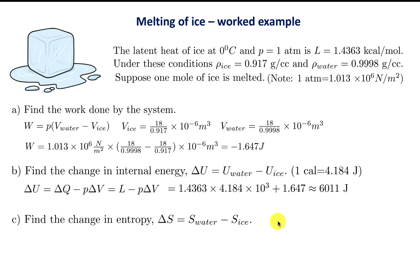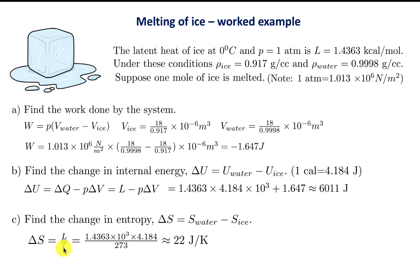Finally, find the change in entropy. We expect ΔS to be positive because water is more disordered than ice. The change in entropy is the latent heat divided by the melting temperature: ΔS = L/T = L/(273 K). Putting in the latent heat and working out the result gives ΔS = 22 J/K. This is positive because the ordered state of ice broke bonds and became the relatively more disordered state of water.